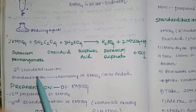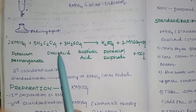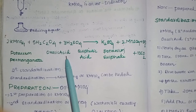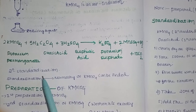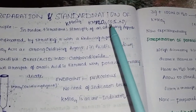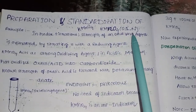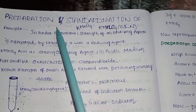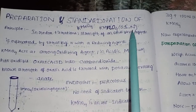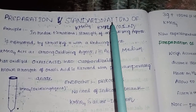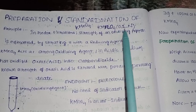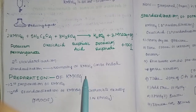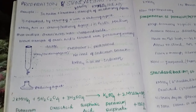Here, potassium permanganate is a secondary standard. The primary standard, oxalic acid, is 100% pure and is used for standardization. The main reason for standardization is that when we prepare KMnO4, it is not exactly 0.1 normal, so we need to confirm the exact concentration through standardization.